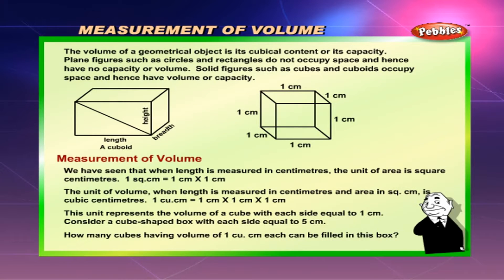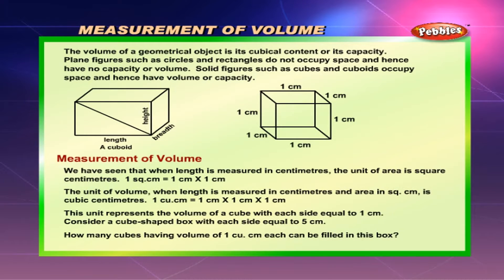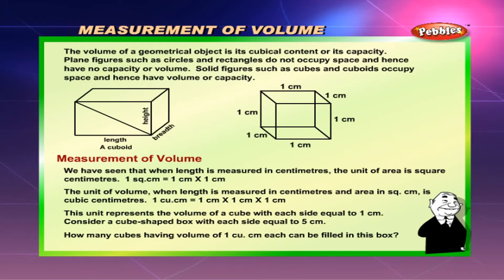When length is measured in centimetres, the unit of area is square centimetres. One square centimetre is equal to one centimetre into one centimetre. The unit of volume when length is measured in centimetres and area in square centimetres is cubic centimetres. One cubic centimetre equals one centimetre into one centimetre, representing the volume of a cube with each side equal to one centimetre.